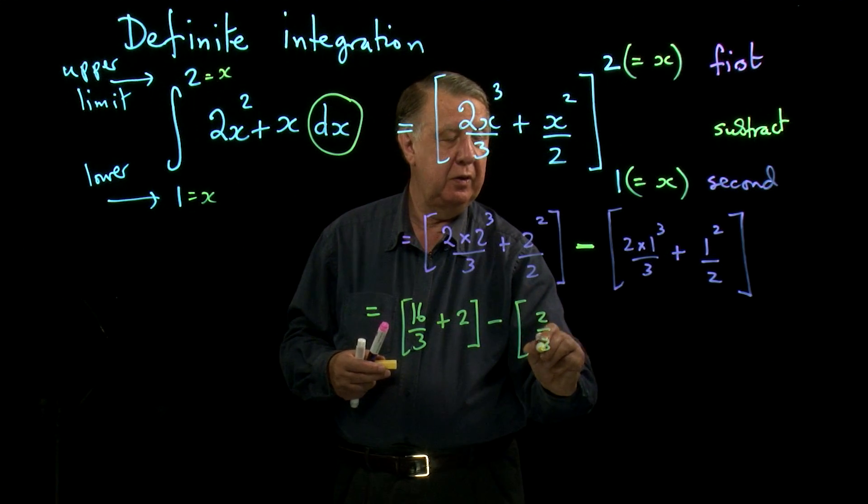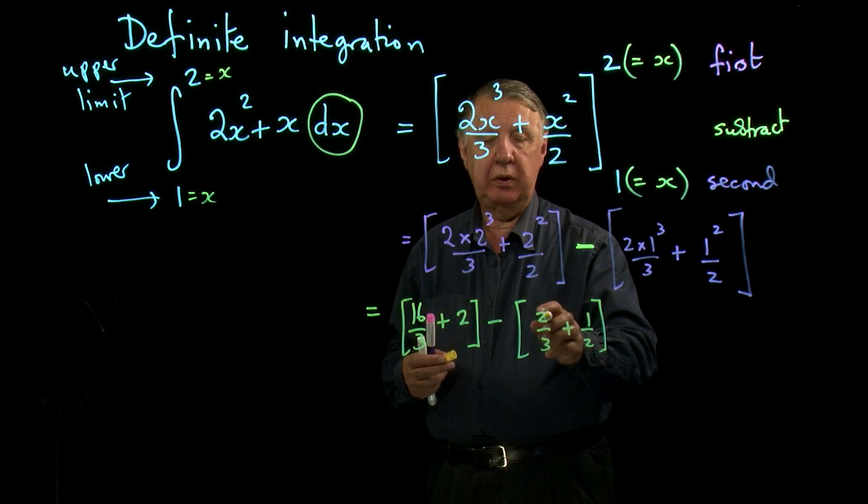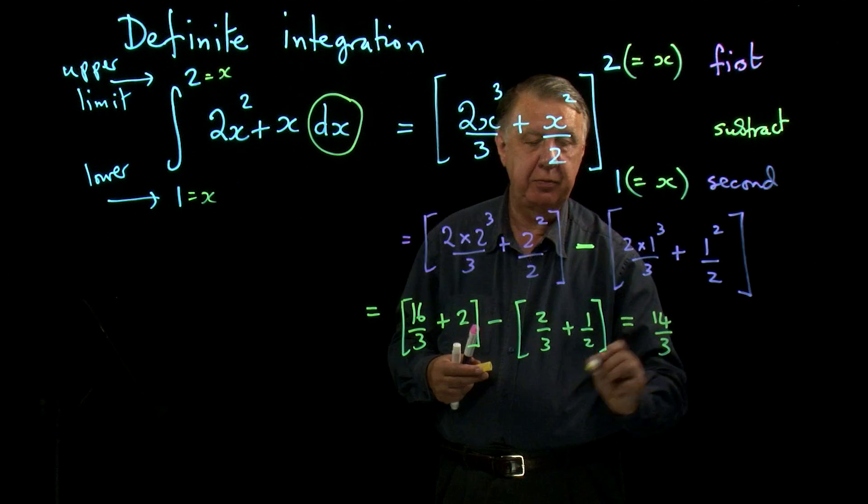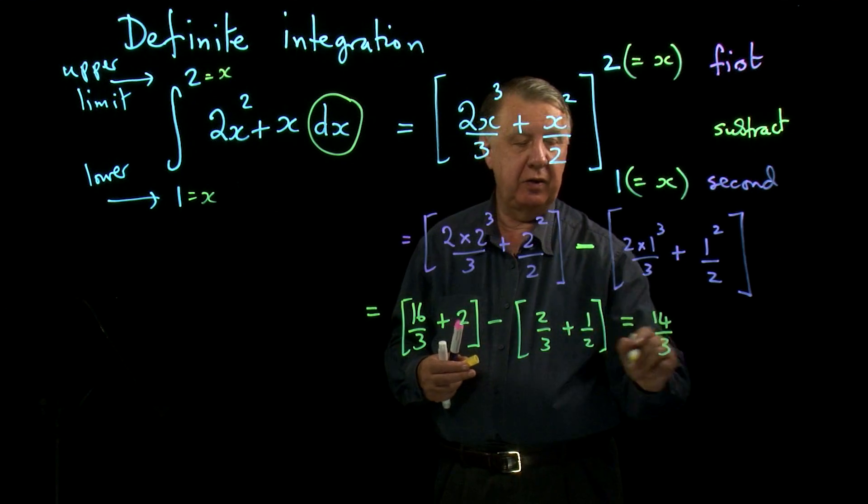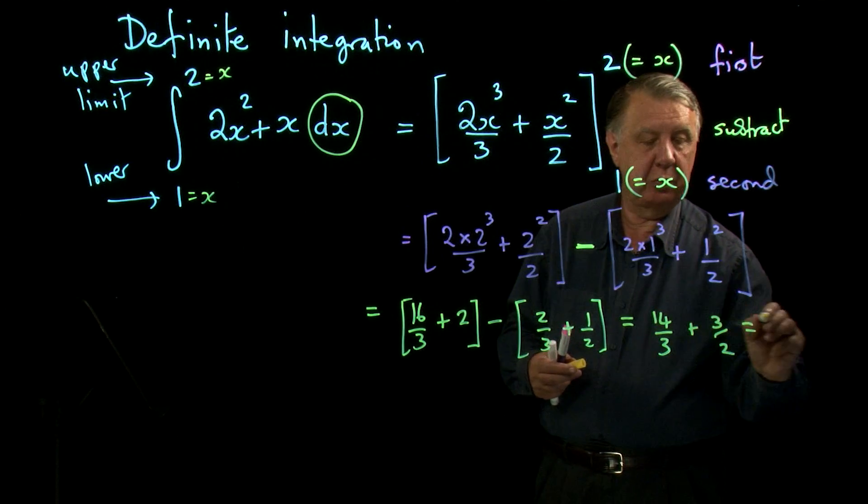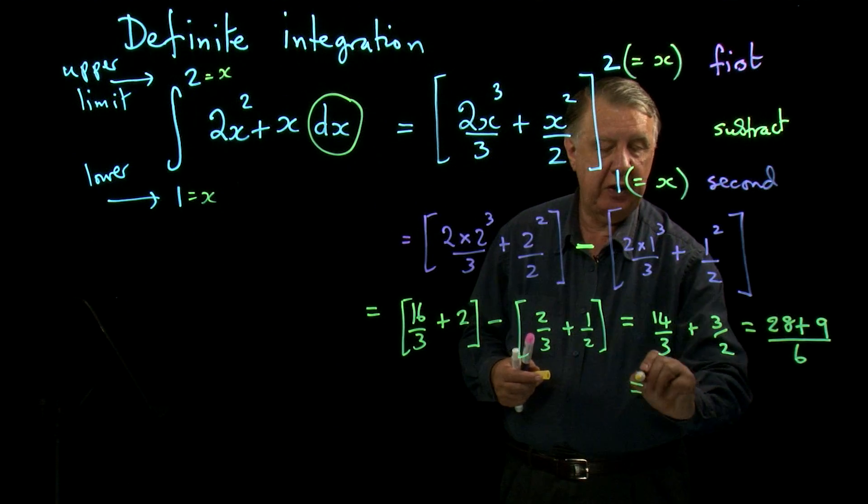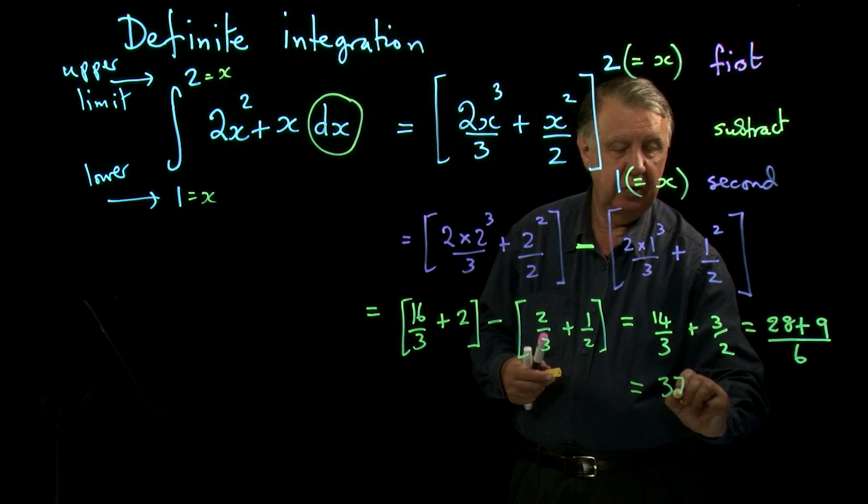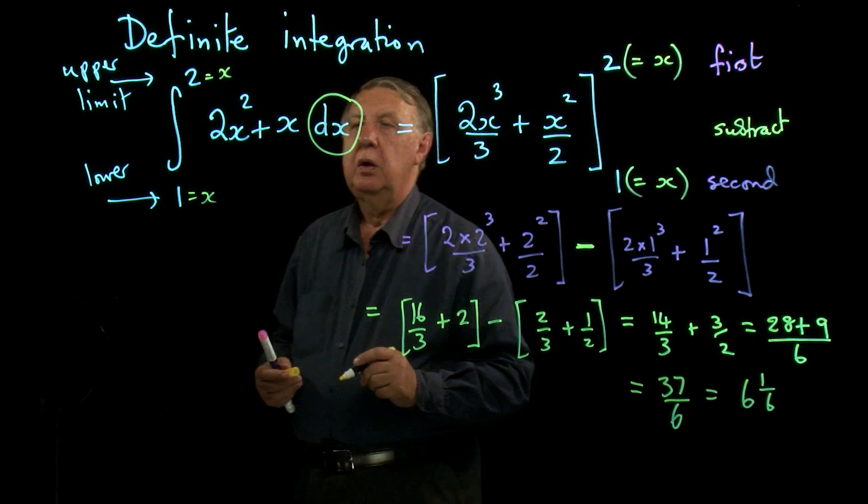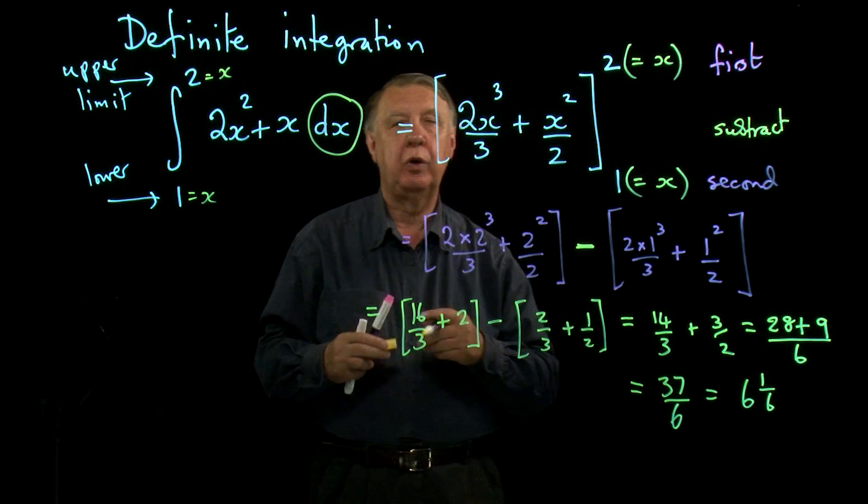And then you work this out: 8 times 2 is 16 over 3 plus 4 over 2 which is 2, take away 1 times 2 is 2 over 3 plus 1 half. I would put the thirds together so 16 over 3 take away 2 over 3 is 14 over 3, take away 1 half is 1 and a half. So 2 times 14 is 28, 3 times 3 is 9 over a common denominator of 6 gives us the final answer of 28 and 9, 37 over 6, which is 6 and 1/6.